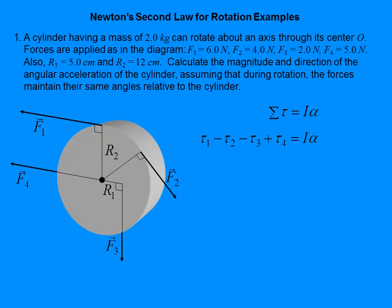Before we just start throwing stuff in, let's look at these torques and notice that one of them is actually zero. Torque four — because the extension of torque four, the lever arm, goes through the axis of rotation. So if you're pulling straight out, you're not going to get any rotation. There'll be no turning effect, no torque.